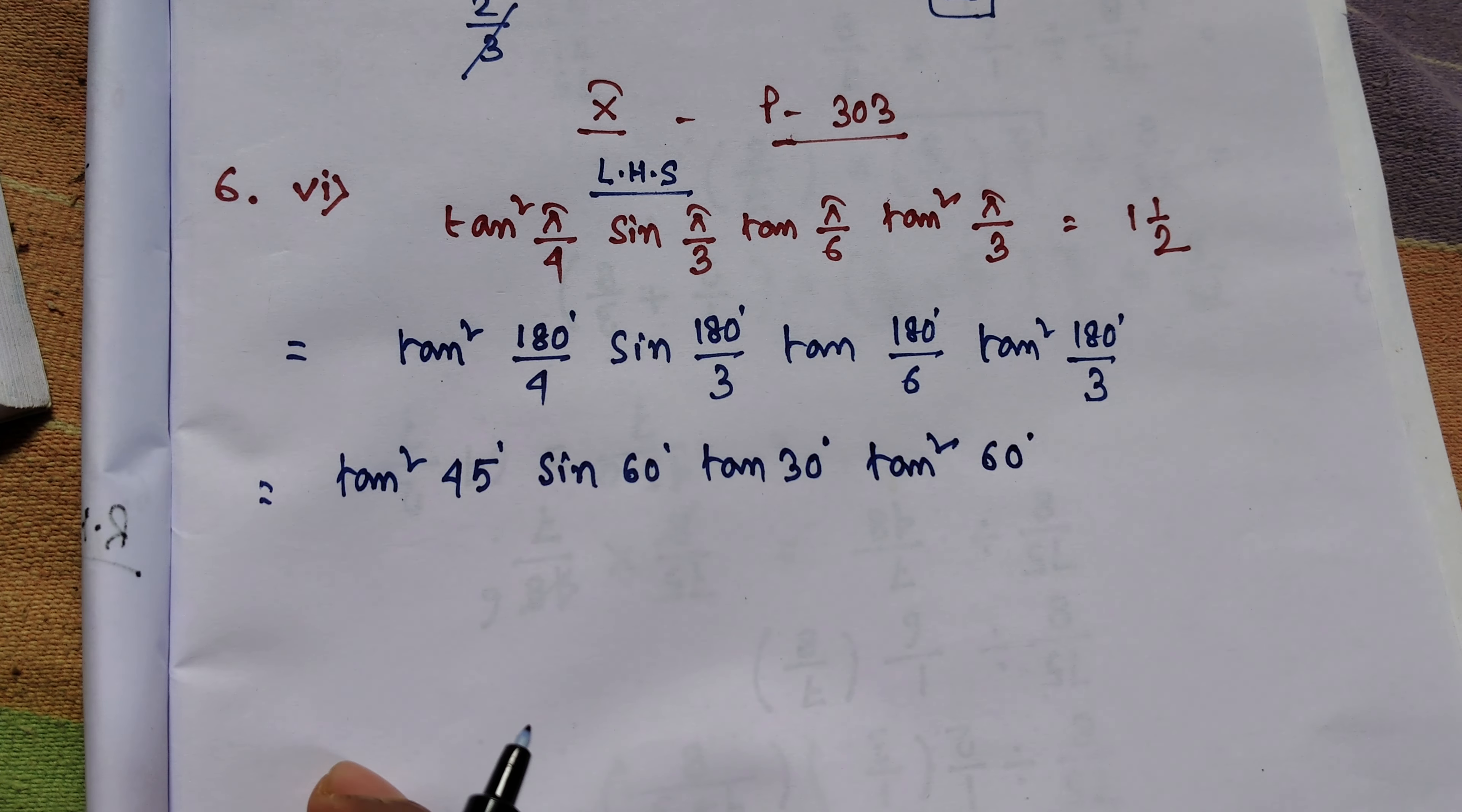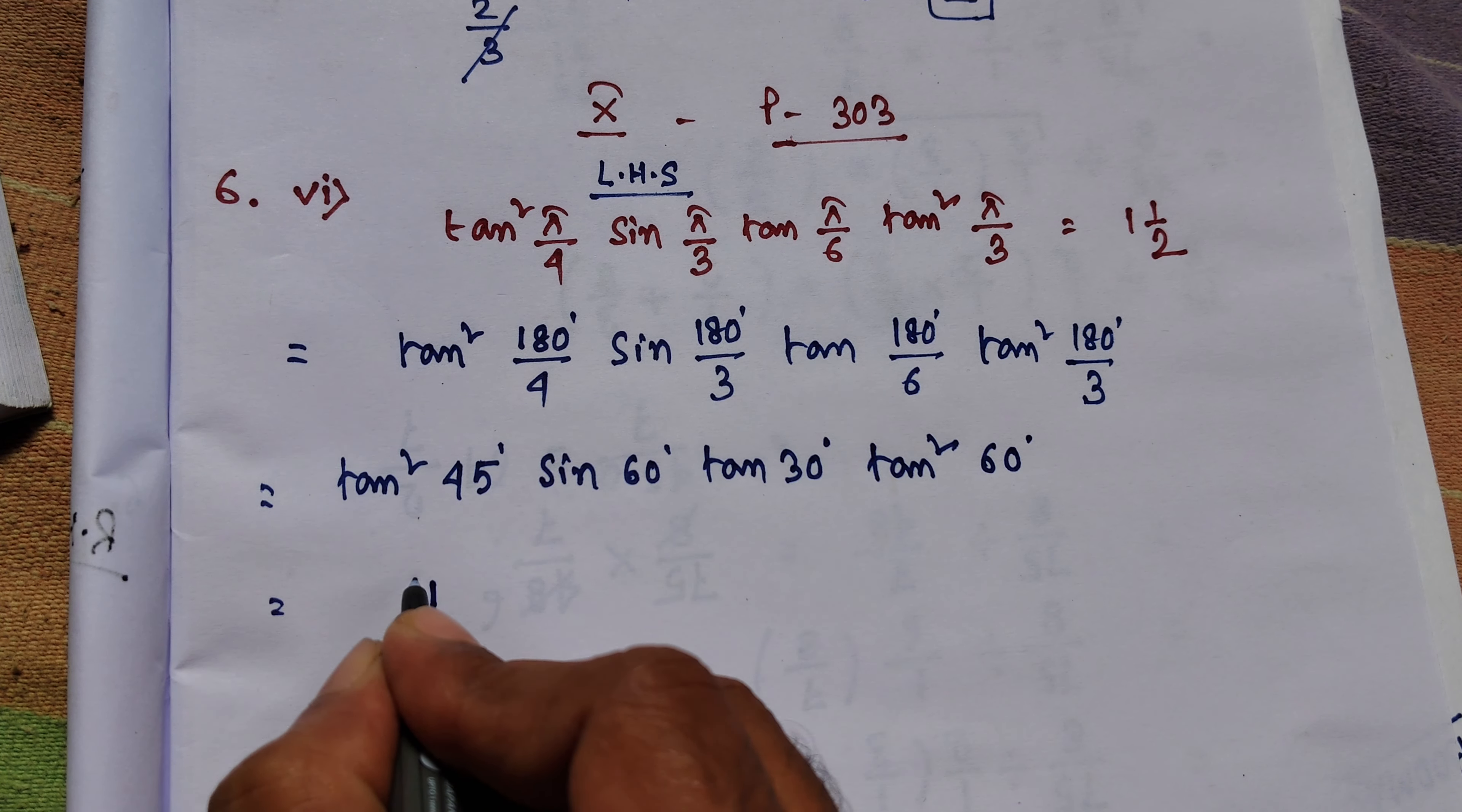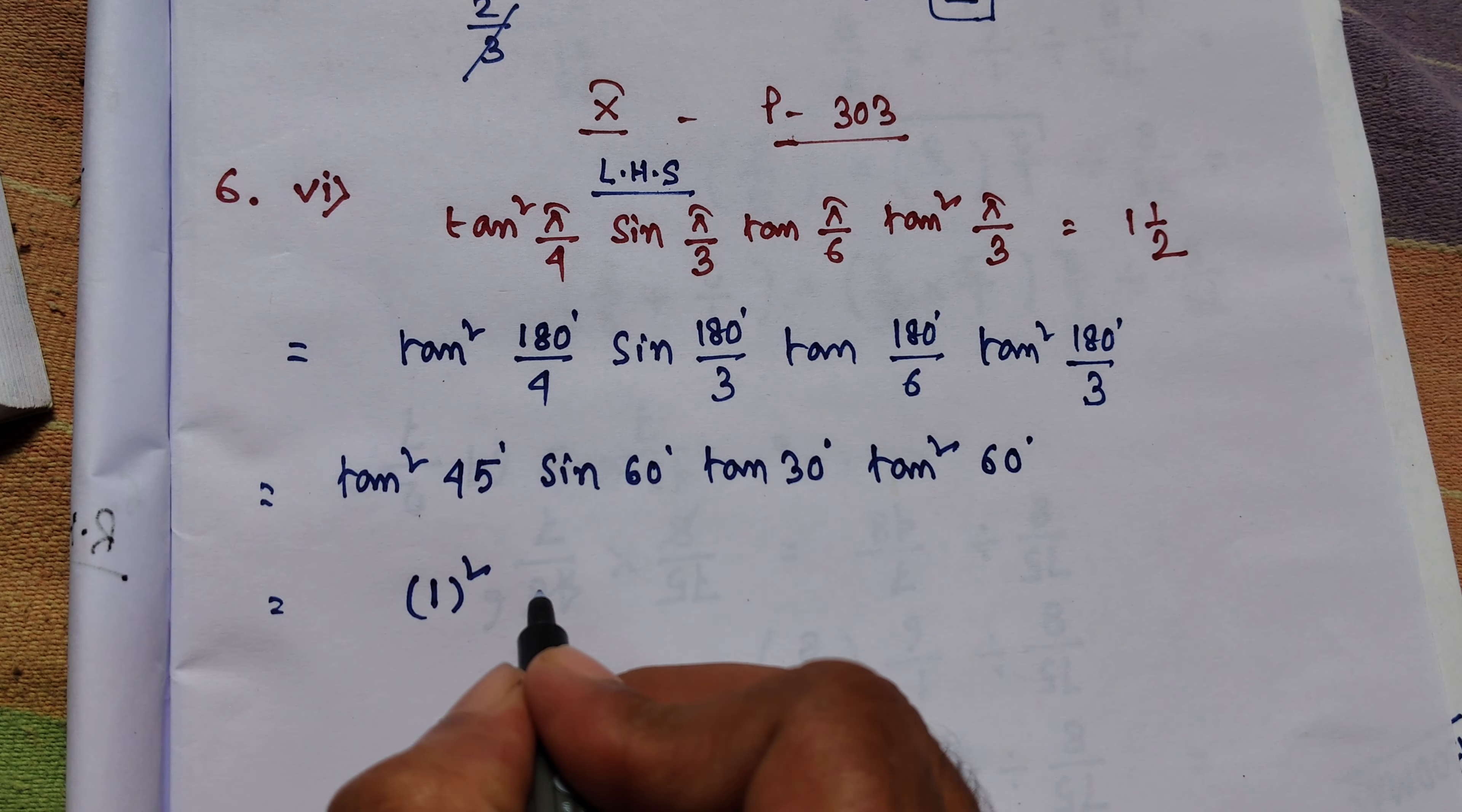So let's put this one. Tan 45 degrees is equal to 1, sin squared 60 degrees, tan 60 degrees is equal to root 3 by 2.